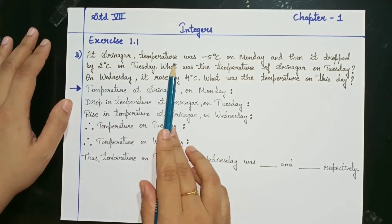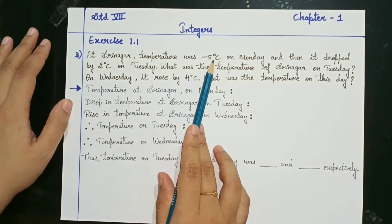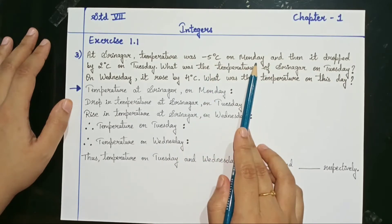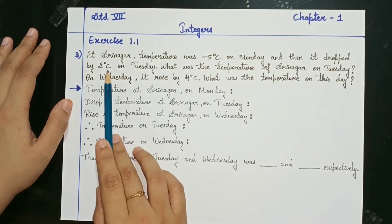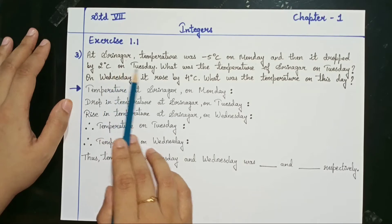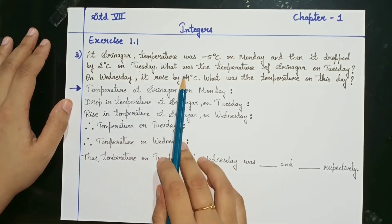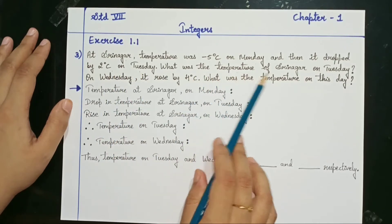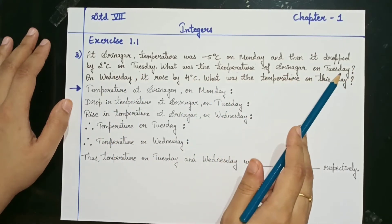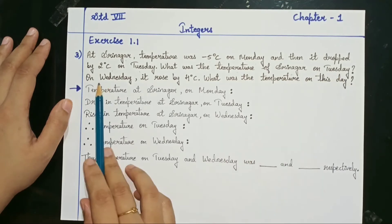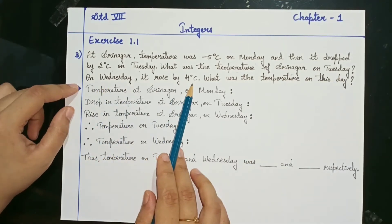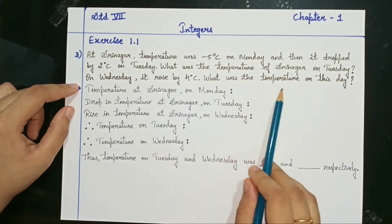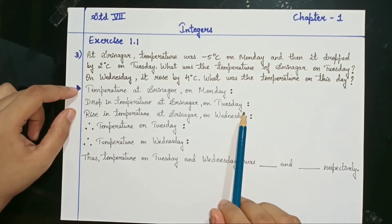At Srinagar, temperature was minus 5 degrees Celsius on Monday and then it dropped by 2 degrees Celsius on Tuesday. What was the temperature of Srinagar on Tuesday? Then on Wednesday, it rose by 4 degrees Celsius. What was the temperature on this day?